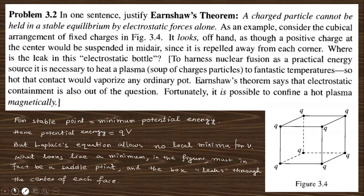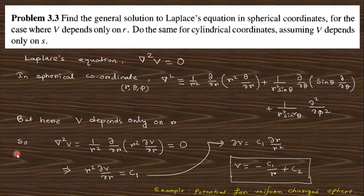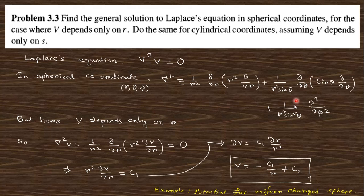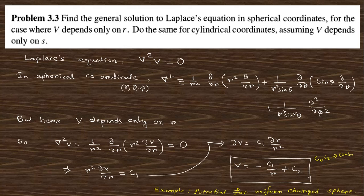Question 3.3: find the general solution to Laplace's equation in spherical coordinates for the case where V depends only on R. The Laplace equation ∇²V = 0 in spherical coordinates is (1/R²)(d/dR)(R² dV/dR) + angular terms = 0. If V depends only on R, the angular terms vanish. Integrating twice gives V = −C₁/R + C₂, where C₁ and C₂ are constants determined by boundary conditions. The potential of a uniformly charged sphere is an example of this case.